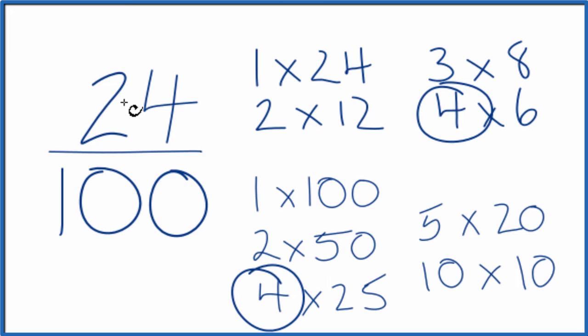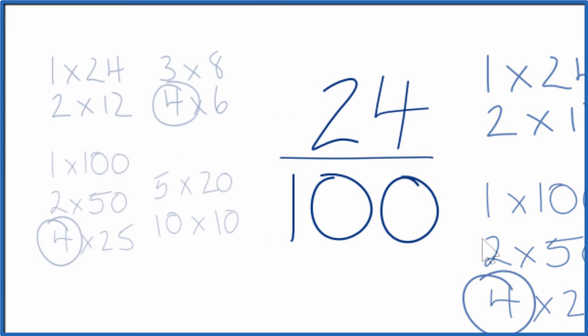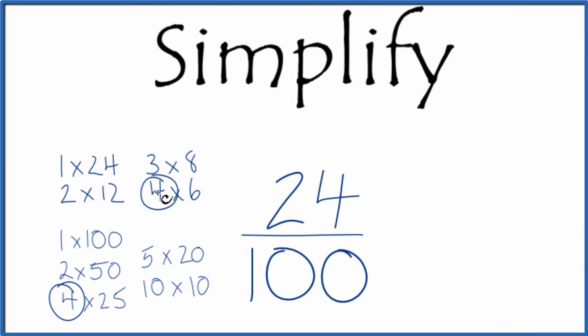So we divide 24 by 4, 100 by 4, and we'll simplify 24 over 100. Let's move this over here. So 24 divided by 4 is 6 and 100 divided by 4 is 25.